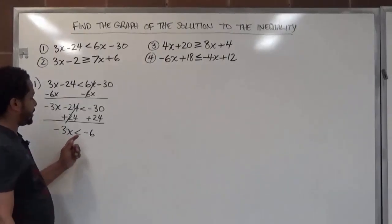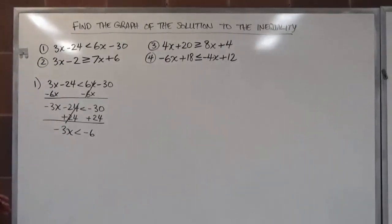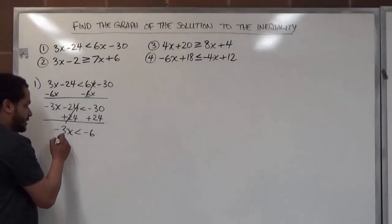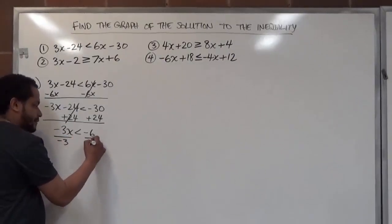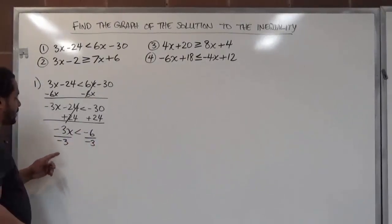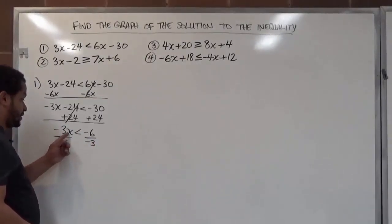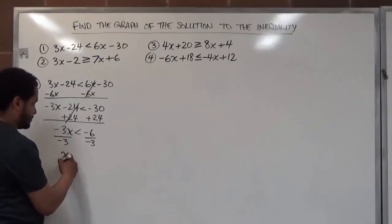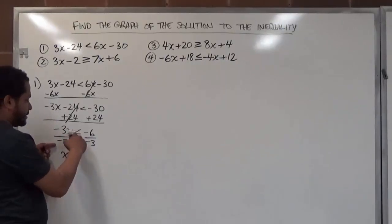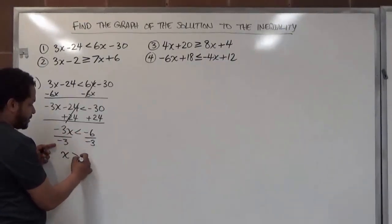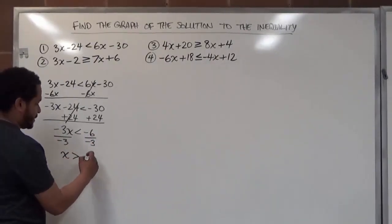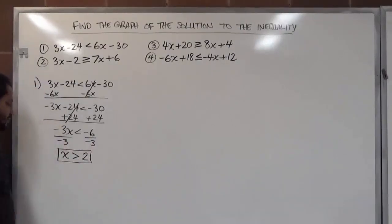Now we have negative 3x less than negative 6. We need to divide both sides by the coefficient of x, which is negative 3. Whenever we divide by a negative term, it changes everything to the opposite value. So negative 3 divided by negative 3 is positive 1, and x becomes positive. The inequality symbol also changes direction and becomes an arrow pointing to the right. Negative 6 divided by negative 3 gives us positive 2. That's our solution.